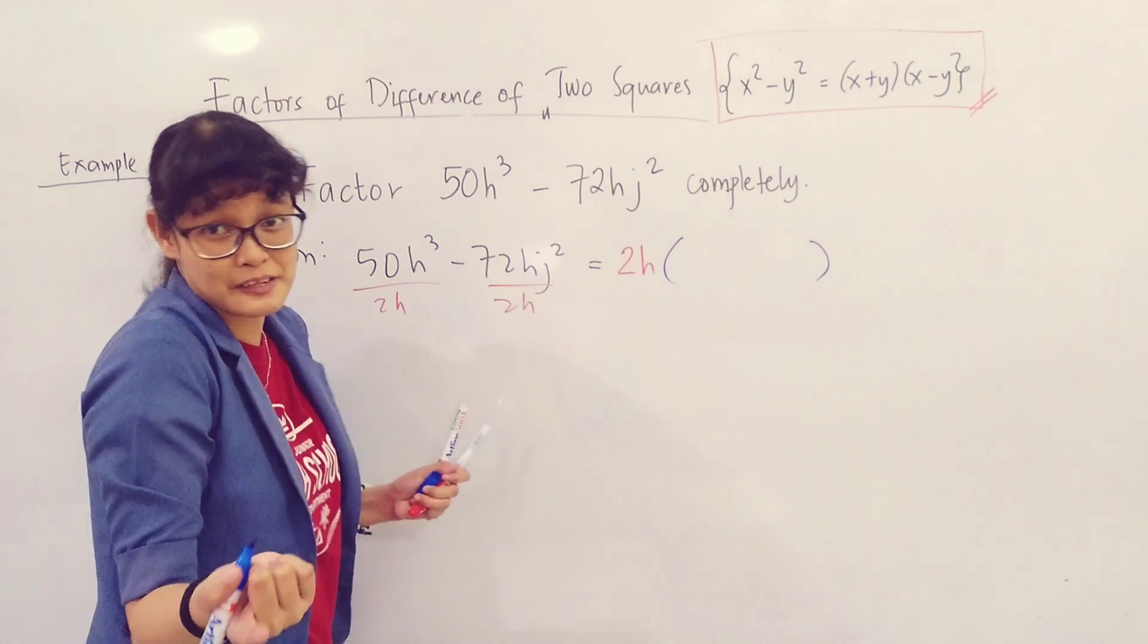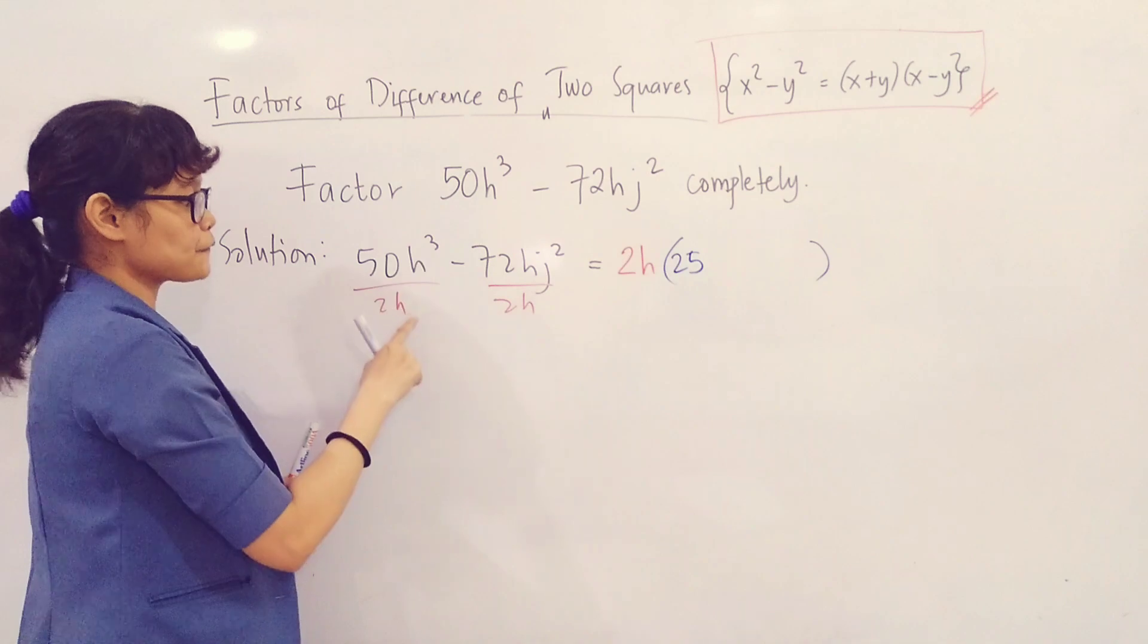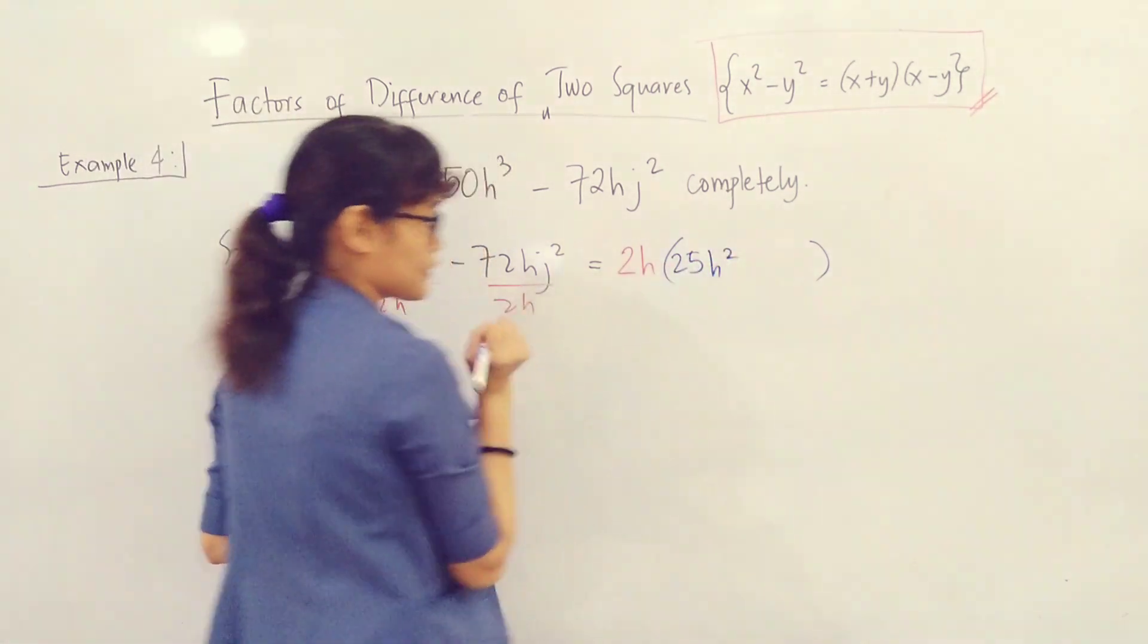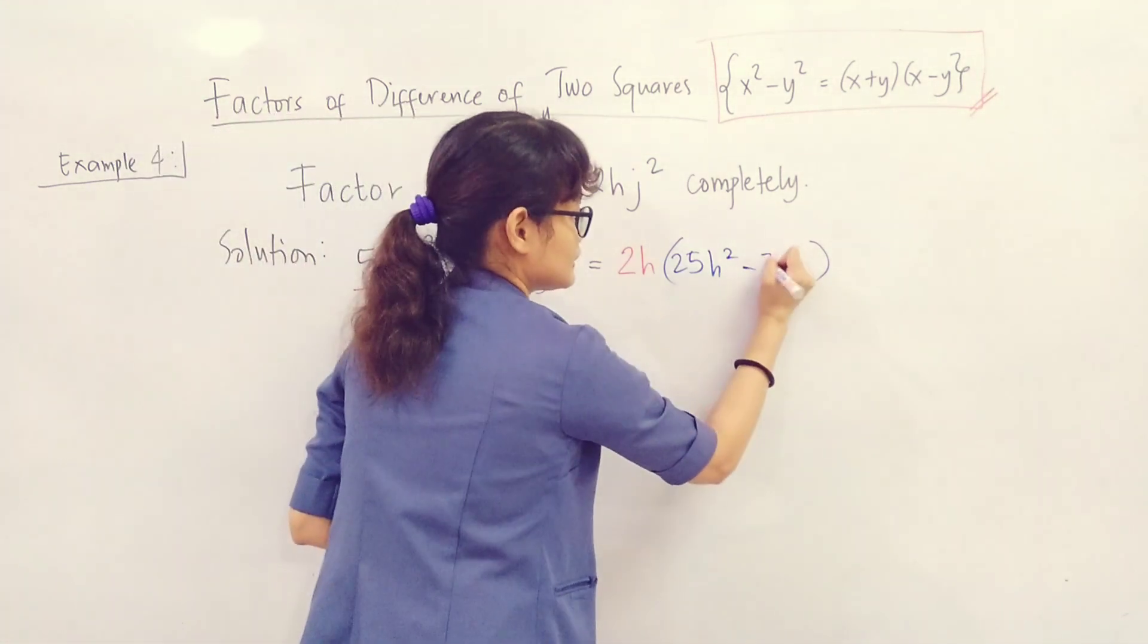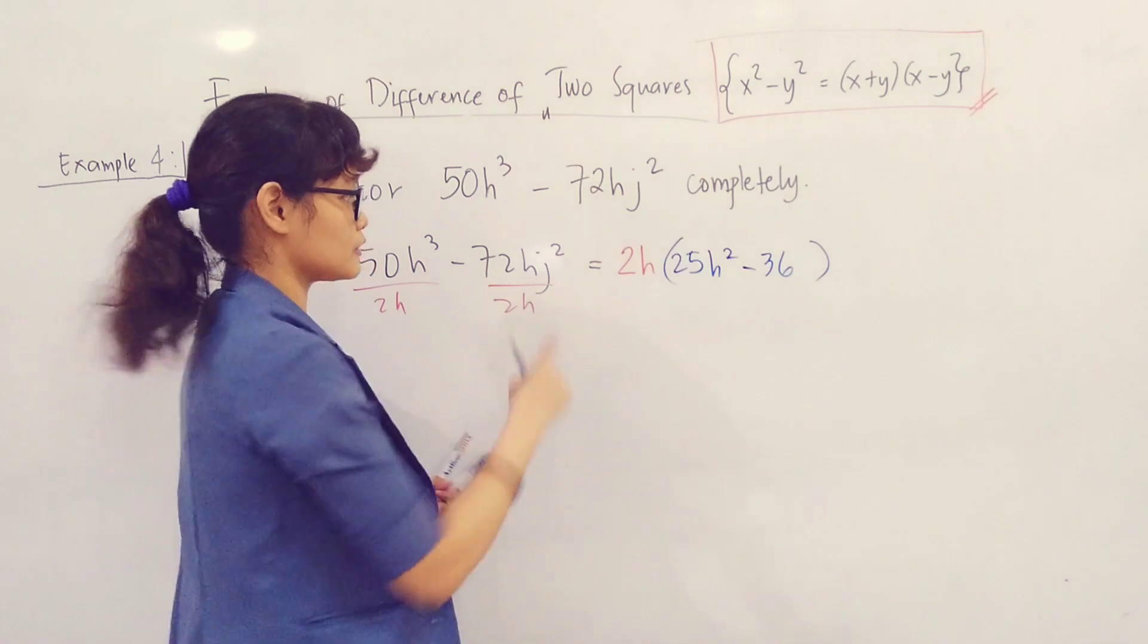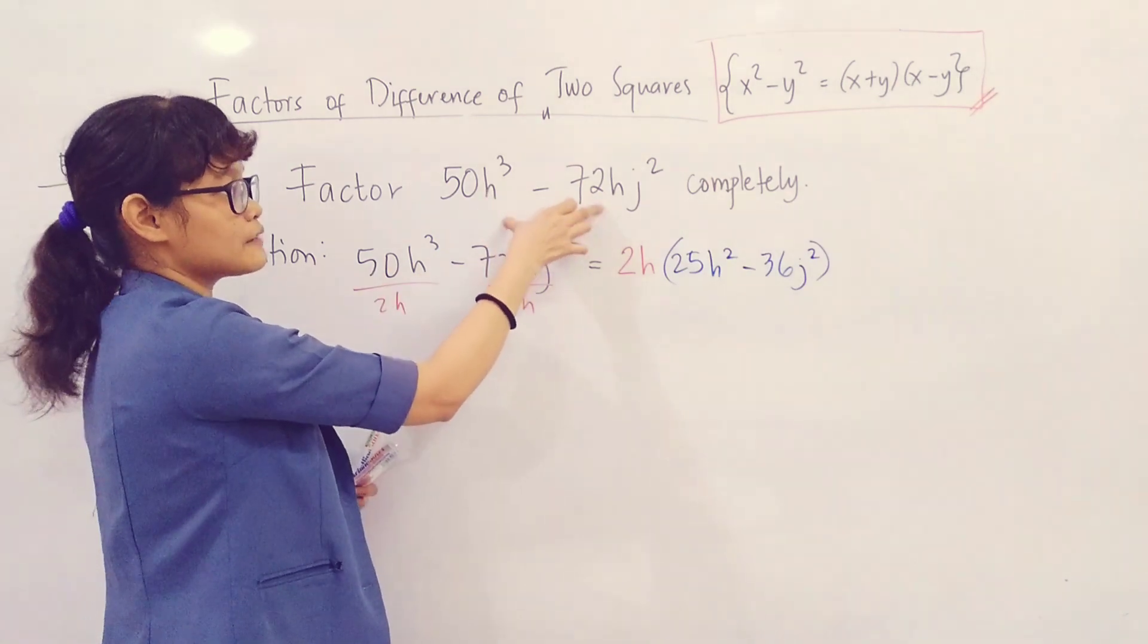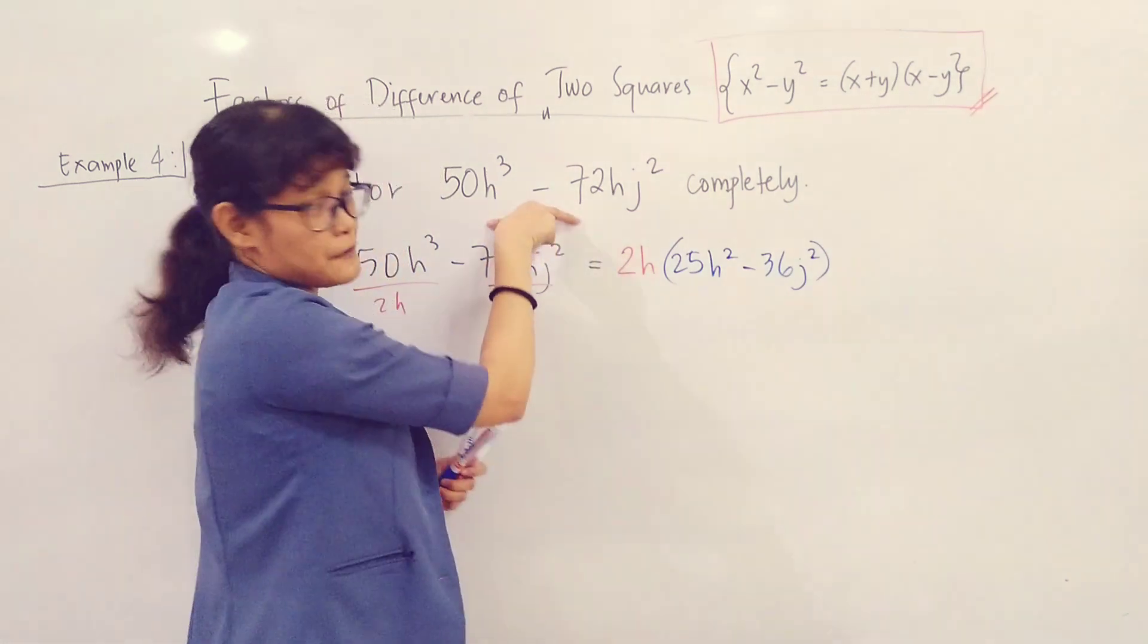Number to number, letter to letter. 50 divided by 2 is 25. H cubed divided by H - subtract 1, that is the quotient law of exponents - so you have H squared. Minus. 72 divided by 2 is 36. H divided by H is already equal to 1, so therefore we'll just copy J squared. We've simplified it. From this original binomial, it became like this. This is the first factor form of this given polynomial.